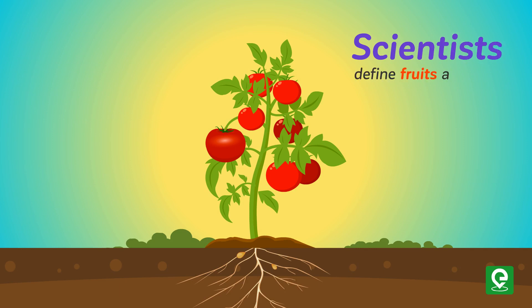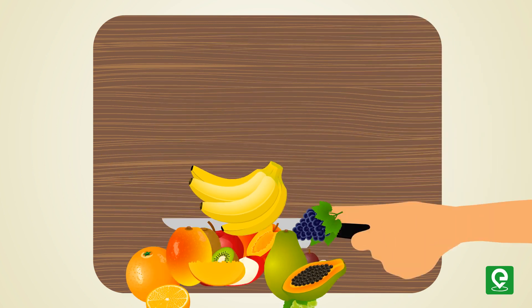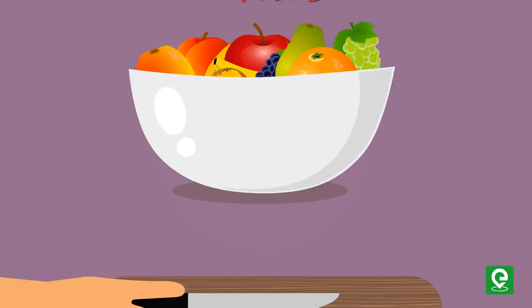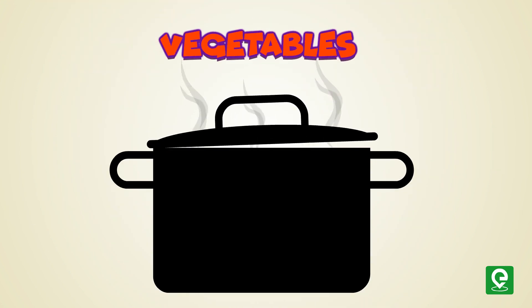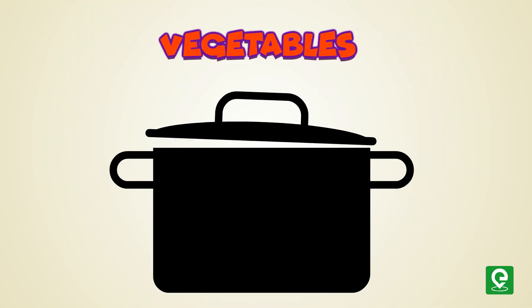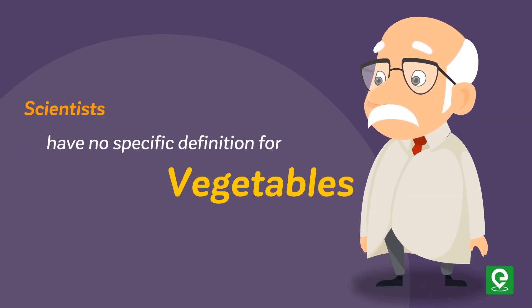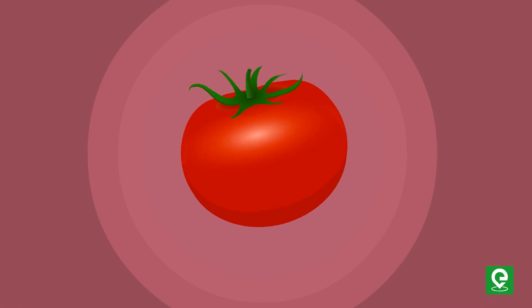Scientists define fruits as a part of a plant that bears seeds. Cooks define fruits as the edible part of a plant with a sweet flavor. On the other hand, cooks define vegetables as the edible part of a plant with a savory flavor. Scientists have no specific definition for vegetables.